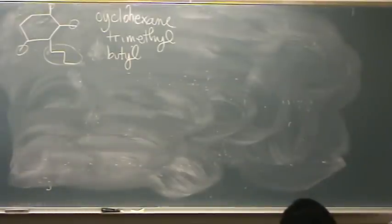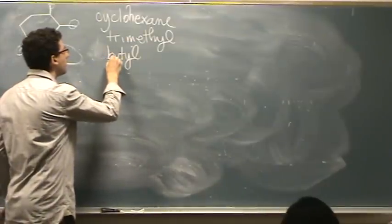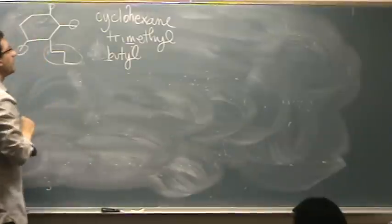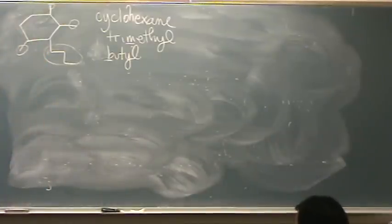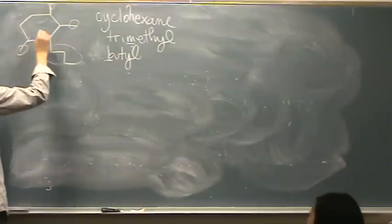And then the numbering. What can be helpful is first to realize, well this is going to be alphabetical. Maybe it won't be helpful. So we've got butyl and trimethyl. Where do we want to put the 1 to get the order of seven numbers? You want it here? Okay. To go around counterclockwise?